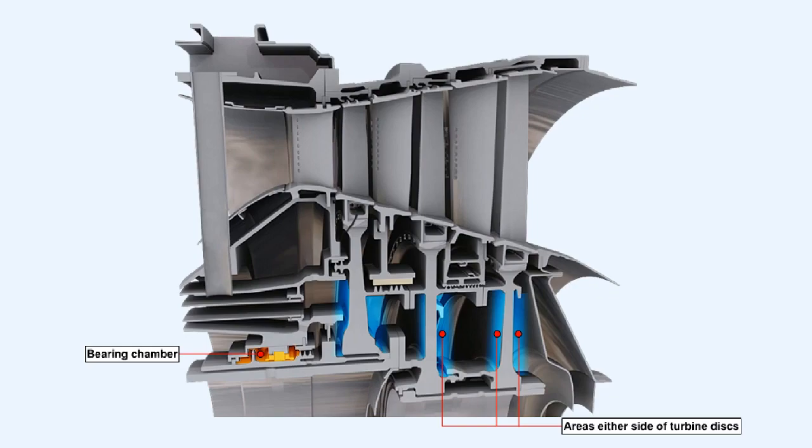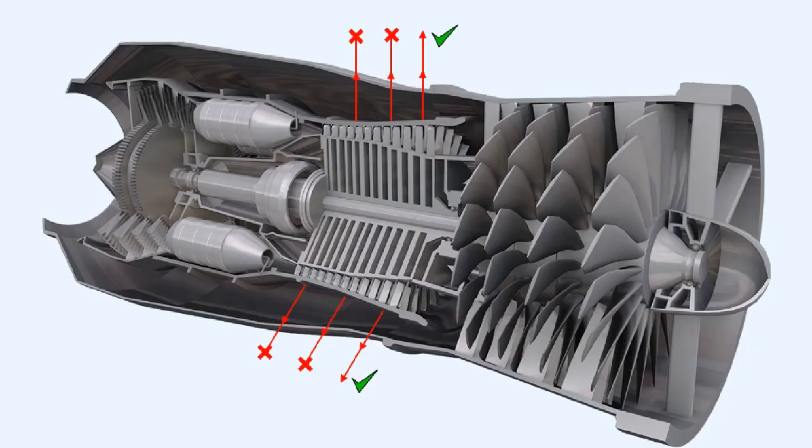Air bled from the compressor for use in the engine is used for internal cooling, for instance cooling the turbine blades. That air can also be used for sealing bearing chambers and areas either side of the turbine discs. Air has considerable work done on it to raise its pressure as it passes through the engine. To ensure maximum engine efficiency it's logical to extract the air from as early a stage in the compressor as possible commensurate with it being able to perform its function.